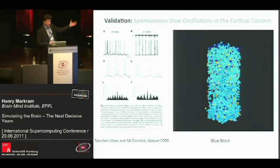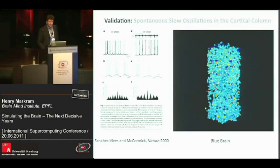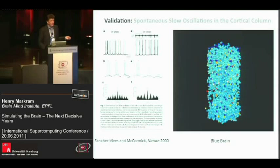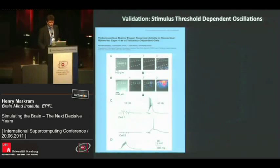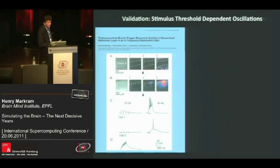We take data from other experiments, mimic those experiments in the model, and we see whether emergent properties happen. They're not programmed to happen. And all the papers that we've found so far — this is another one — they can recreate the experimental emergent properties that have been found.